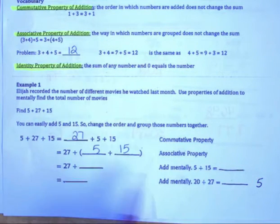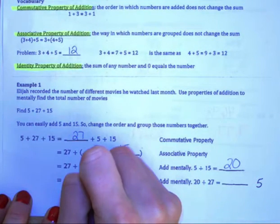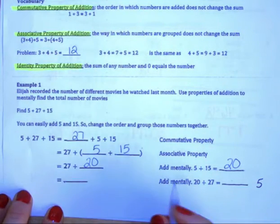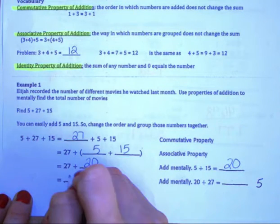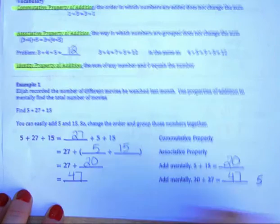So we group those. So we add mentally 5 plus 15 is 20. And then we can do 20 plus 27 mentally, which is 47. So our final answer would be 47 movies.